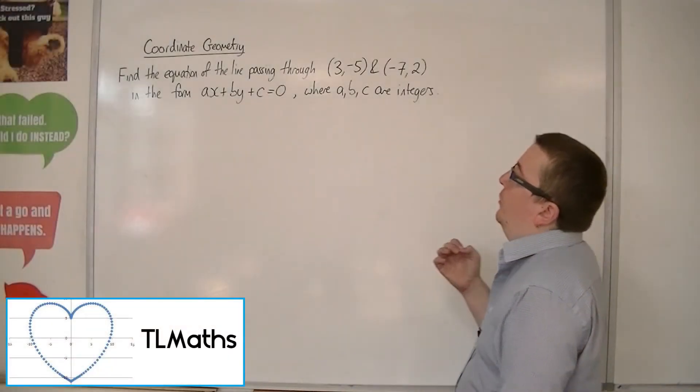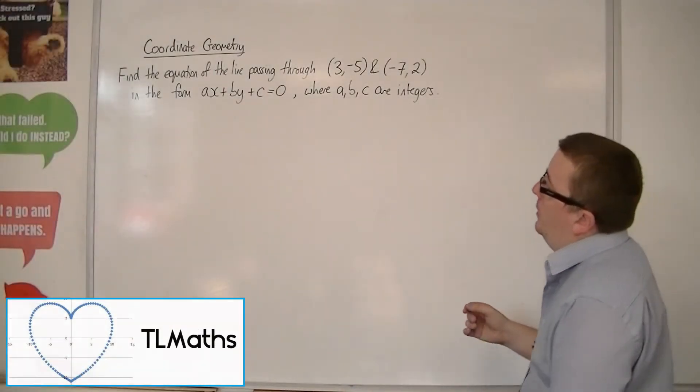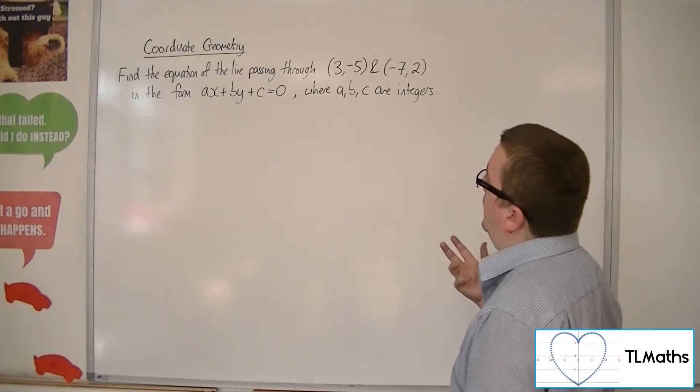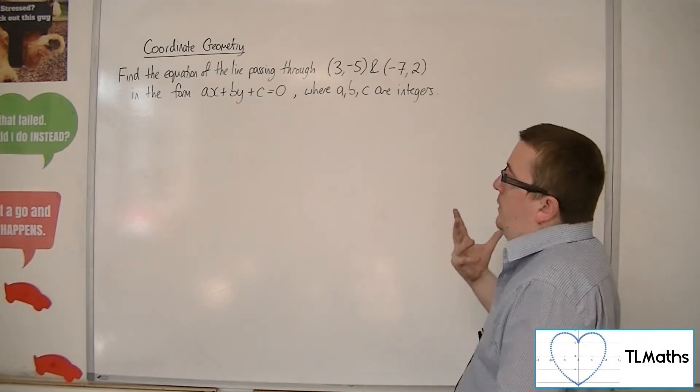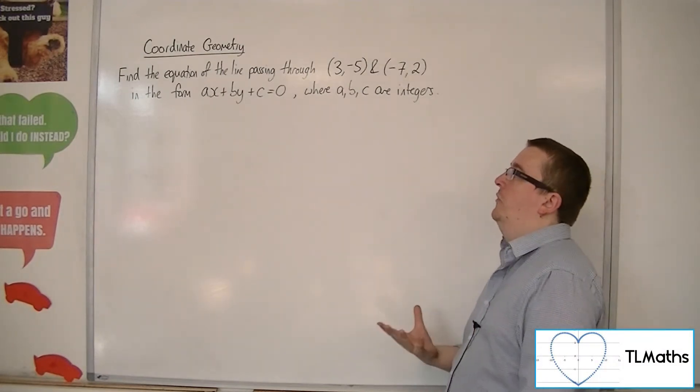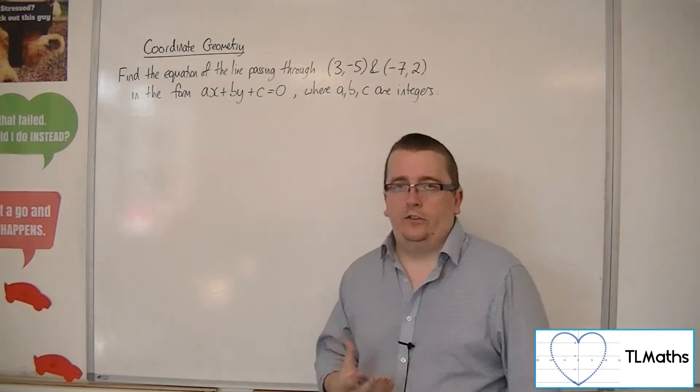So let's say I want to find the equation of the line passing through 3, -5, and -7, 2, in the form ax plus by plus c equals 0, where a, b, and c are integers.